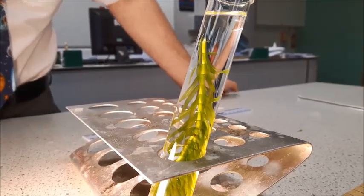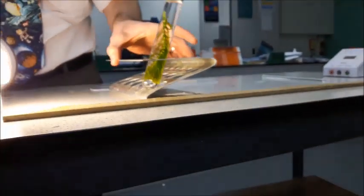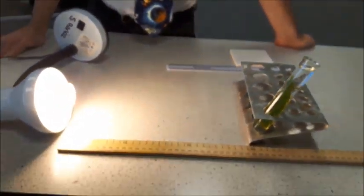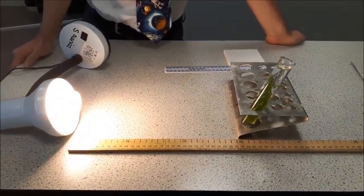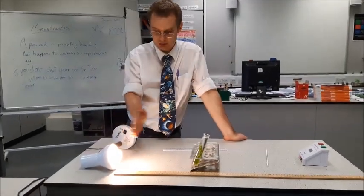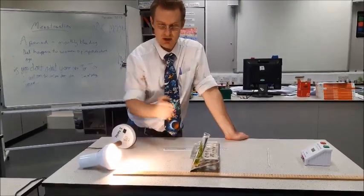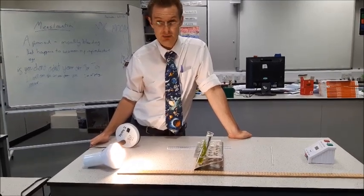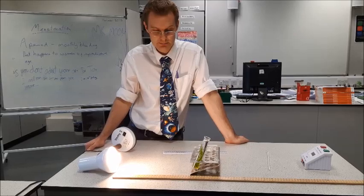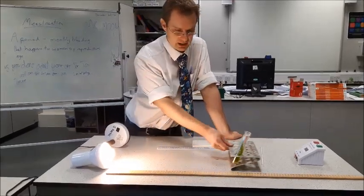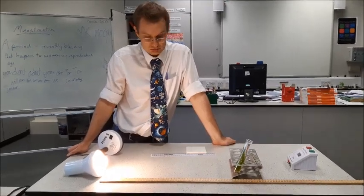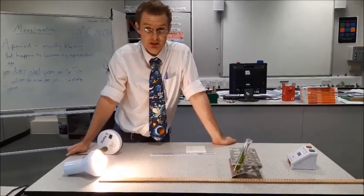After you've counted that minute, you're going to move your plant further away to your next distance. But instead of starting counting again straight away, you need to leave the plant to acclimatize to this new level of light. This is going to take a little while where the amount of light from being so close is still having an impact on how many bubbles are produced. So you need to leave it for five minutes to acclimatize to this new level of light before you take any new readings. Then once again you move it further away, leave it to acclimatize, and then take your next set of readings. So it's as simple as that, that's the photosynthesis experiment.